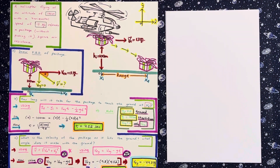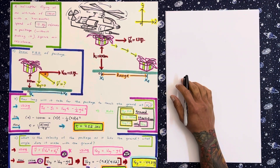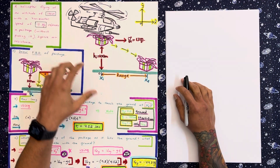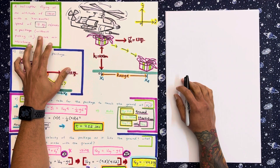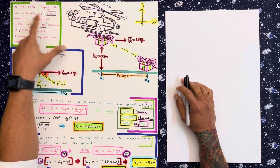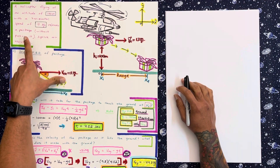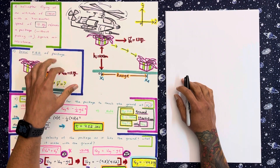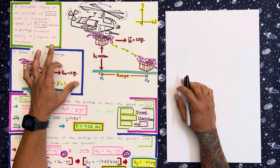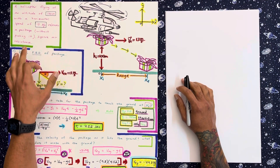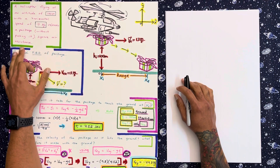Hey guys, welcome back to Genius Learning. Let's take a look at another kinematics problem where we have a helicopter flying at an altitude of 100 meters with a horizontal speed of 13 meters per second, releases a package without pushing it — ignore air resistance.